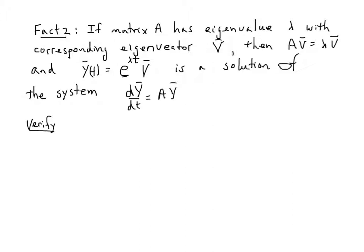Fact two, if I have a matrix A with eigenvalue lambda and corresponding eigenvector v, then we know for sure that A times v equals lambda v, that's the definition of an eigenvalue and an eigenvector. Furthermore, a function, a vector-valued function of the form e to the lambda t times v is a solution of this linear system. I want to verify that for you.